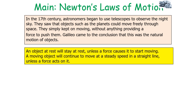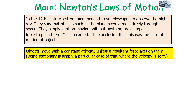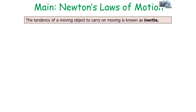It was said that an object at rest will stay at rest unless a force causes it to start moving, and a moving object will continue to move at a steady speed in a straight line unless a force acts on it. So objects move with a constant velocity unless a resultant force acts on them. Being stationary is simply a particular case of this, where our constant velocity is zero.